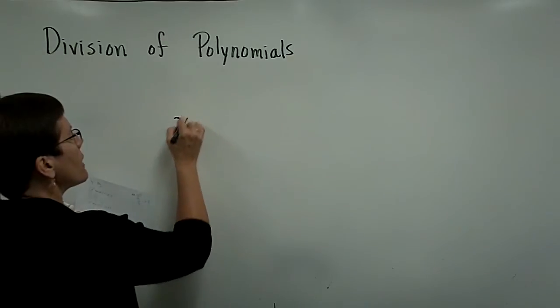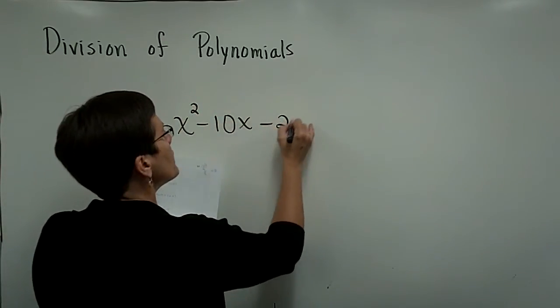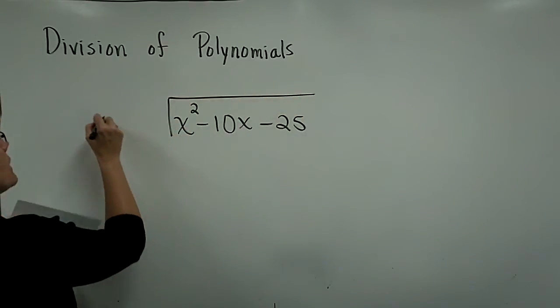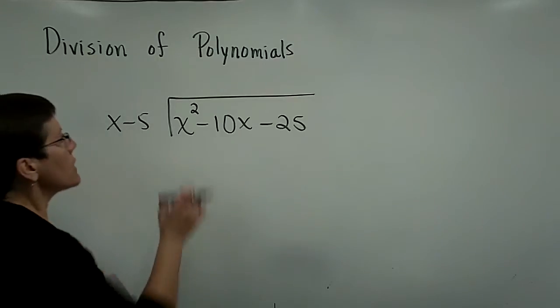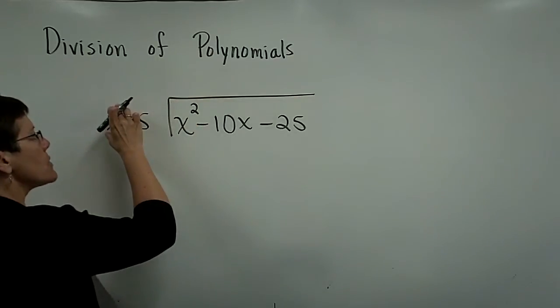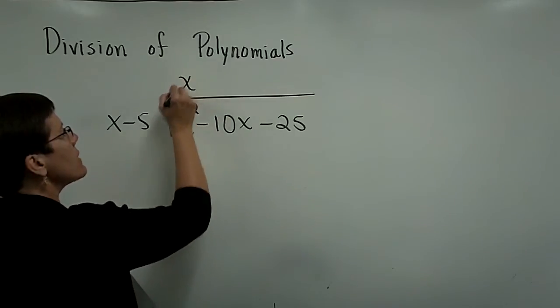And I'm going to give myself a little bit more room by not writing the original problem down. If I asked you to take x squared minus 10x minus 25 and divide it by x minus 5, you first would ask yourself, what times the variable x gives you x squared? And you would state that that's x.